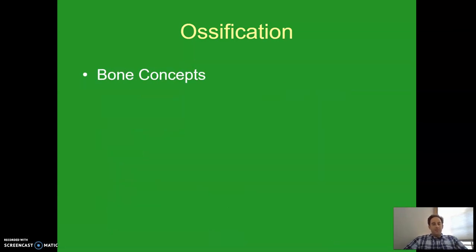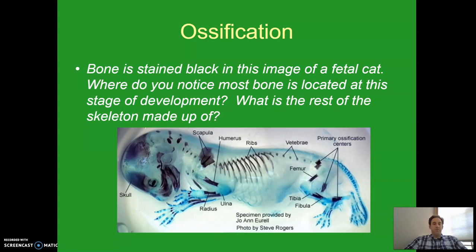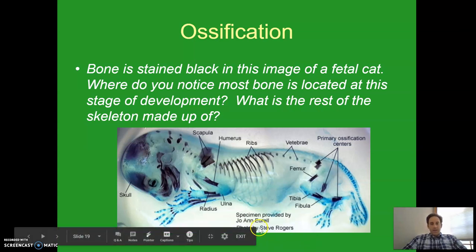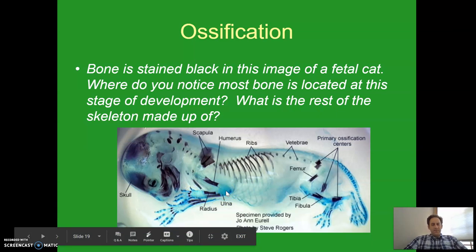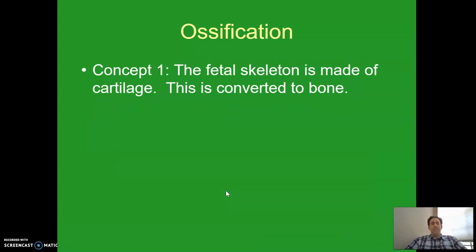To understand the repercussions of this, I've broken things down into a few major bone concepts — physiological aspects of bone. Before we get to the first one, I want to show you this image of a fetal cat where the bone has been stained black. If you look at the arms, you'll notice the entire bone isn't black — only the diaphysis is stained. The rest is made up of cartilage.